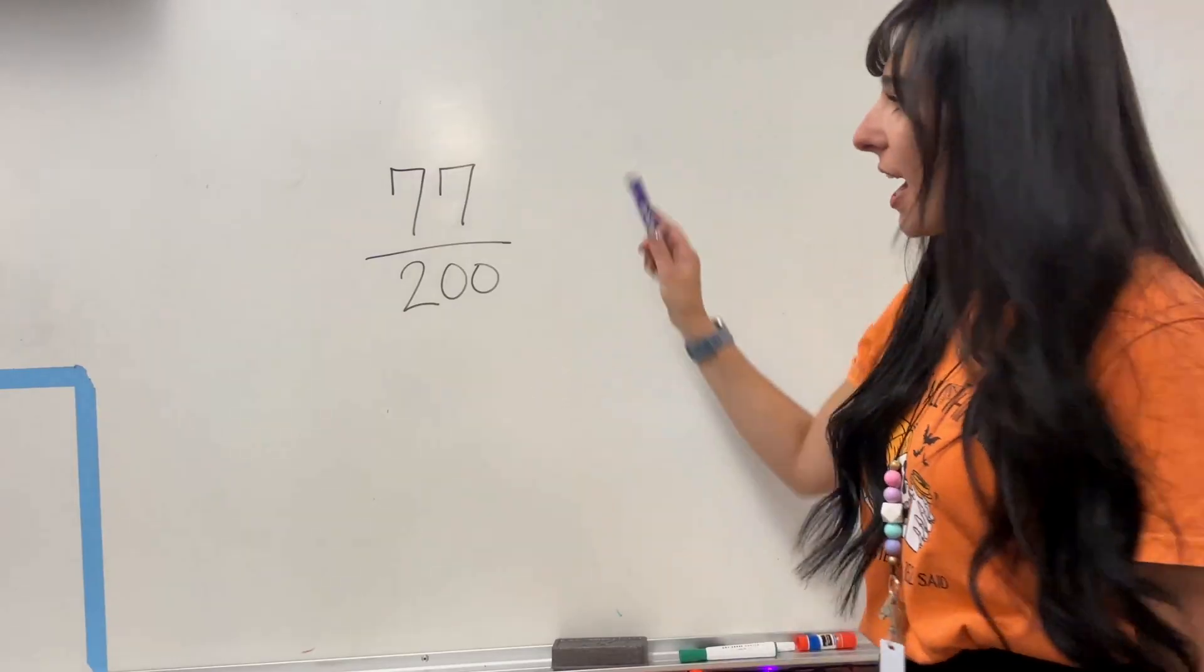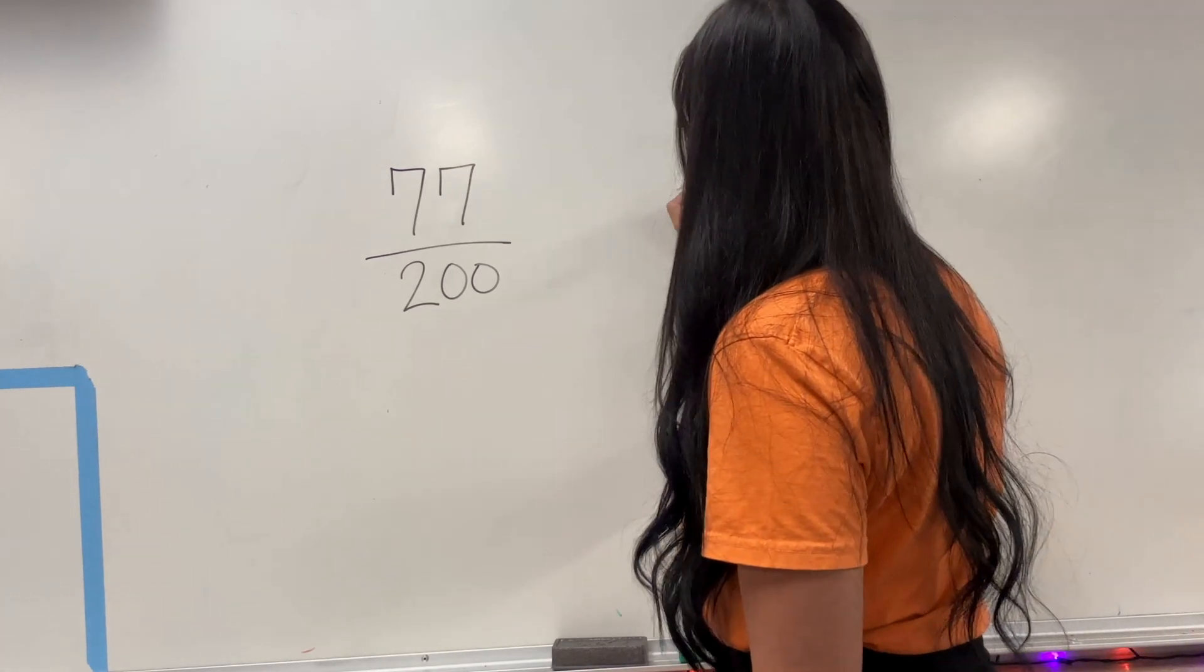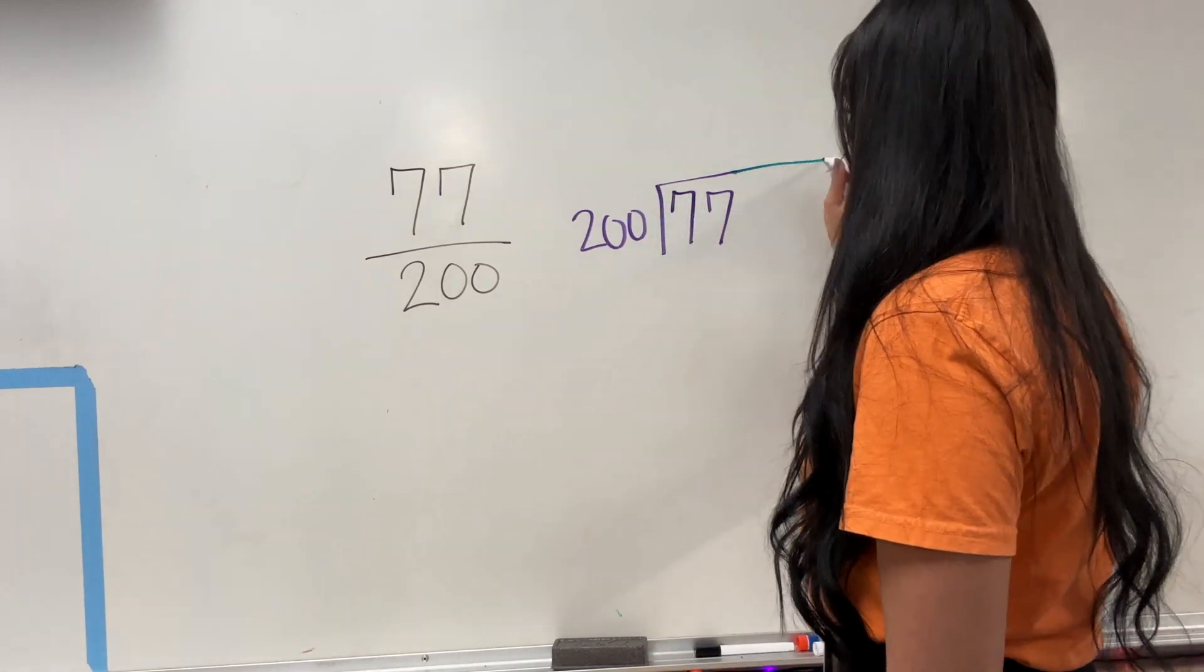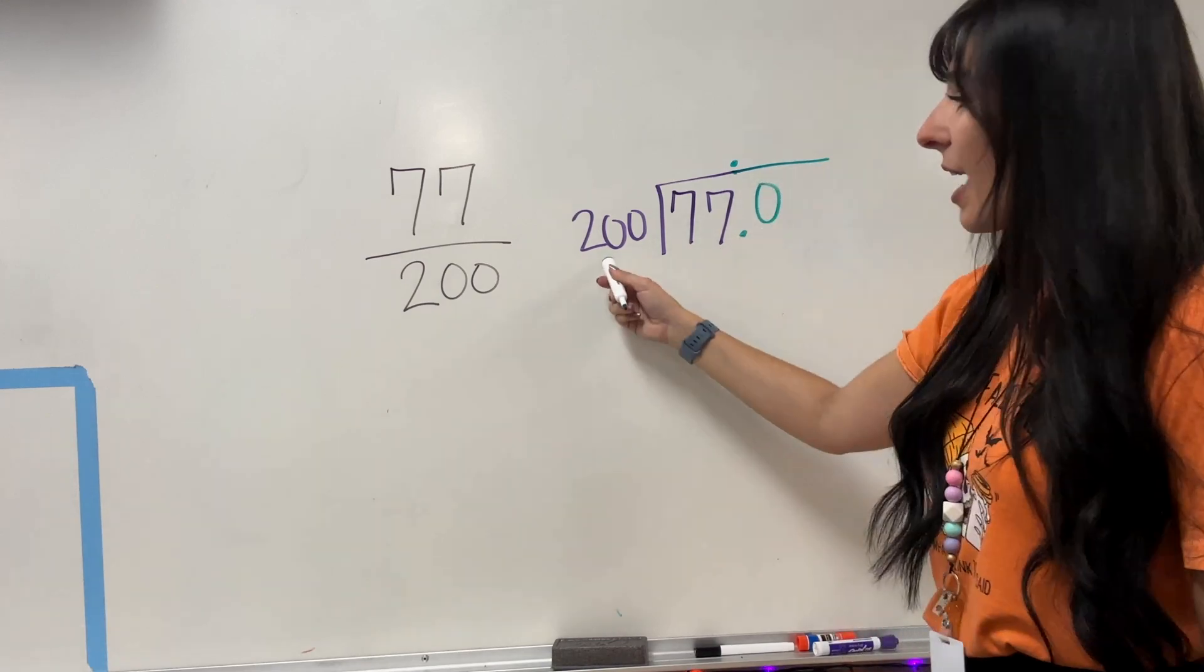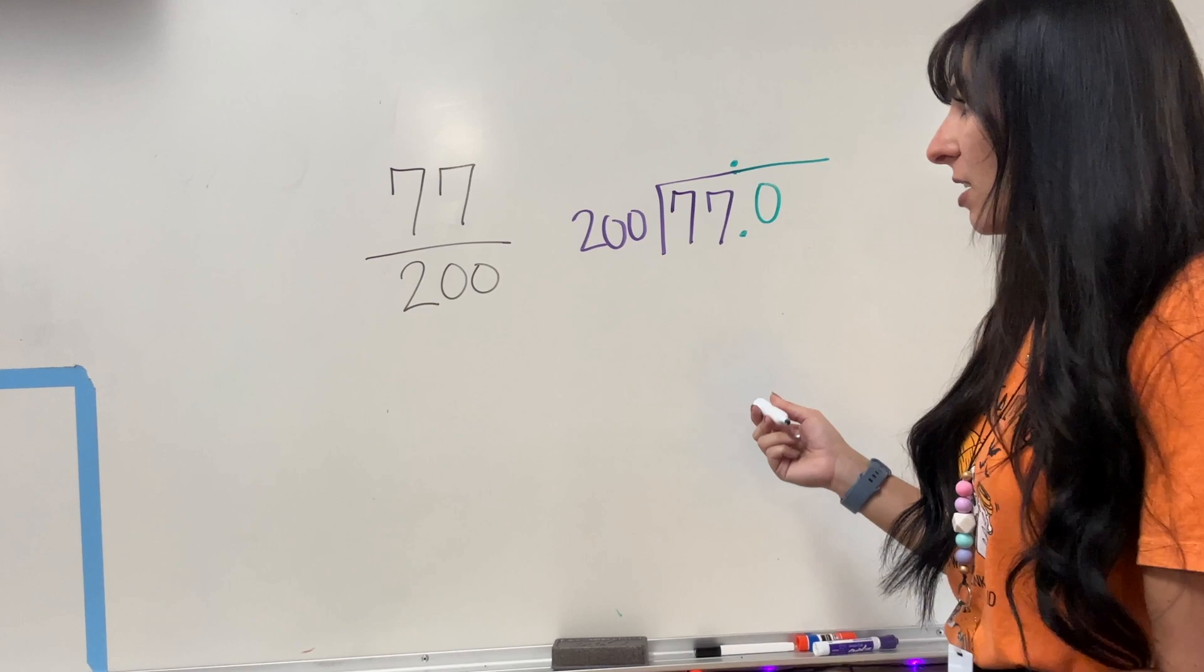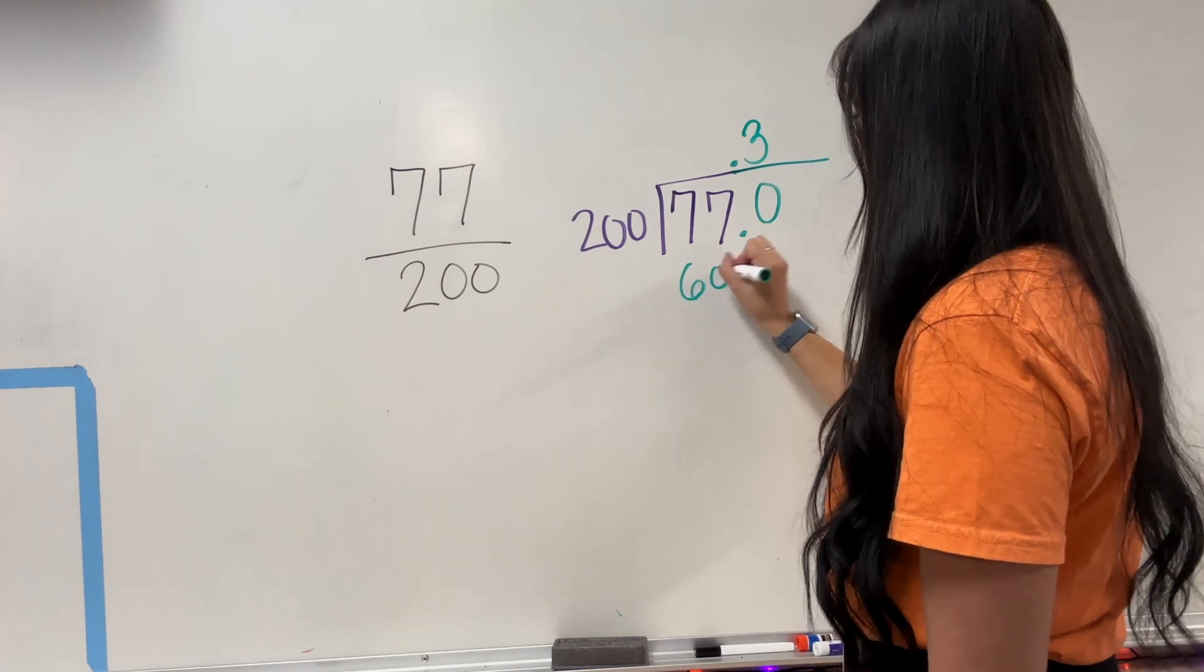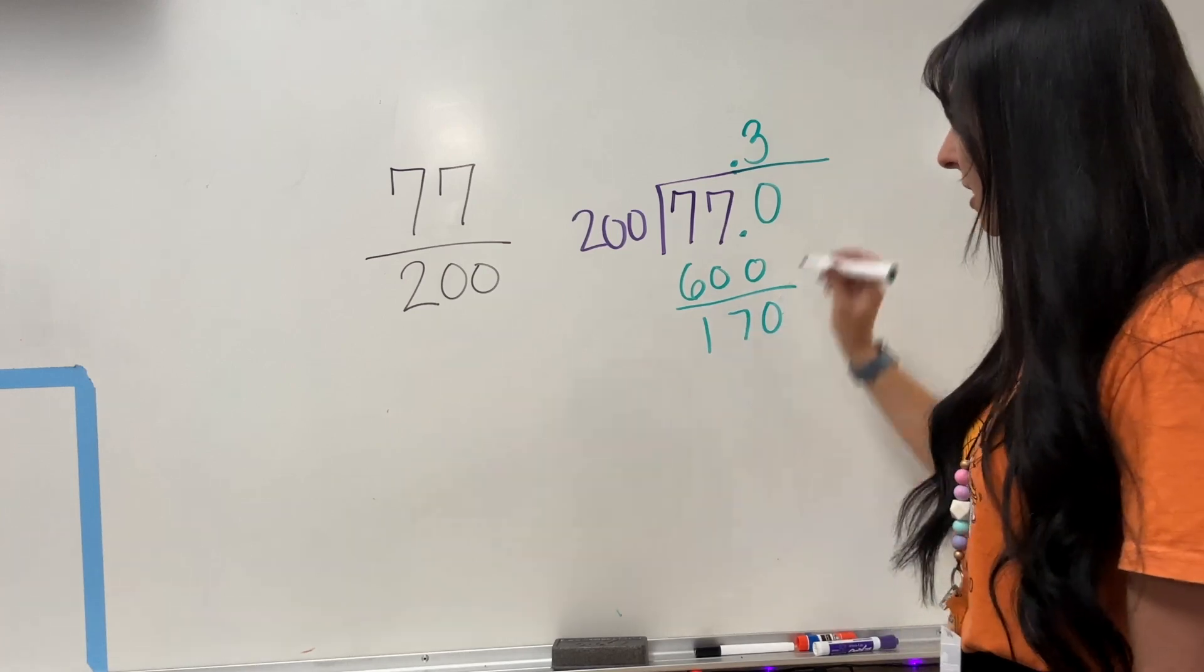So my next fraction, I have 77 over 200. I'm going to put 77 inside, and I'm going to be dividing by my denominator 200. Extend. Add my decimal on top and bottom. Add my 0. How many times can 200 go into 770? So I can go 2, 4, 6. And that's going to be 3 times, giving me 600, leaving me with 170 left.